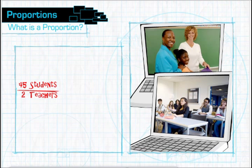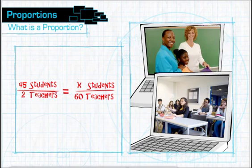Then, to figure out the size of the student body with a proportion of 60 teachers, write the proportion as 45 students divided by 2 teachers equals the unknown number of students, x, divided by 60 teachers. That's your proportion. Now let's solve our Rockport High puzzle.